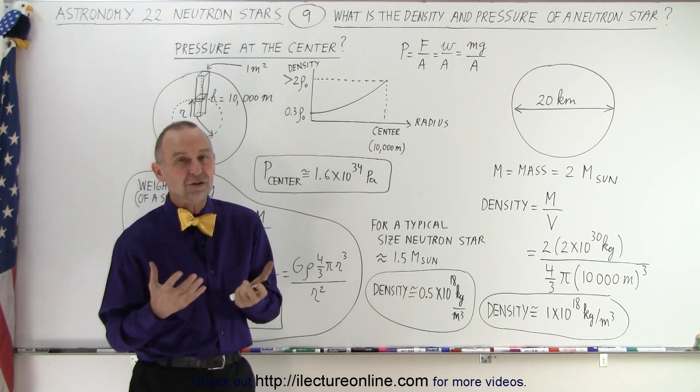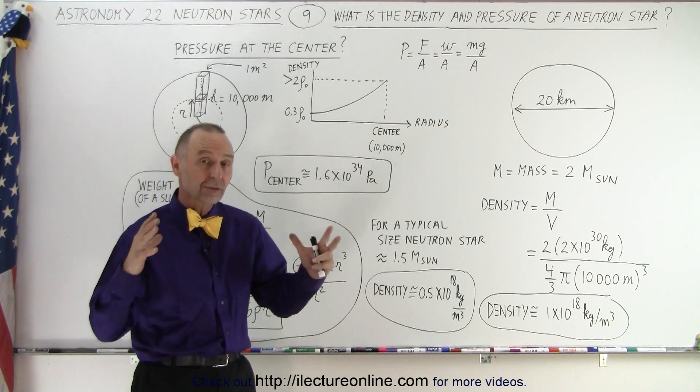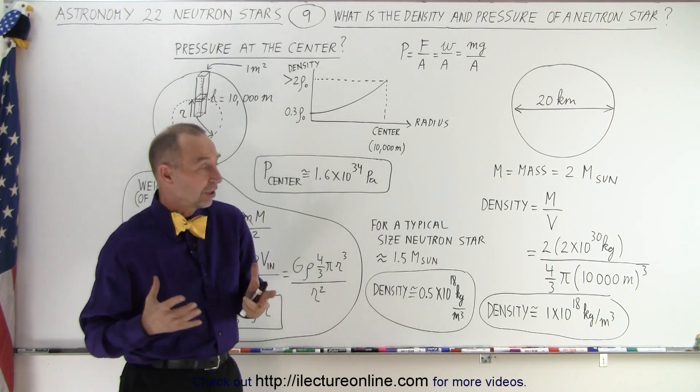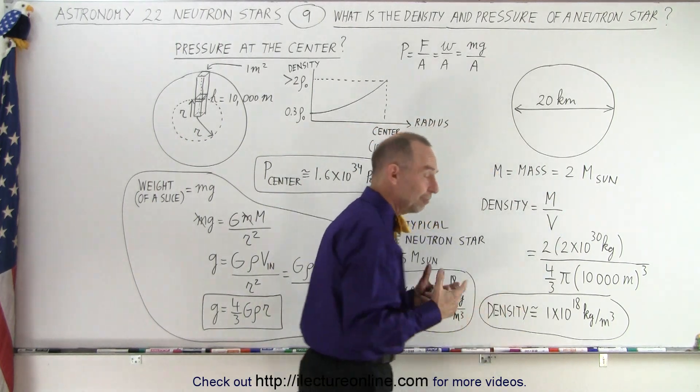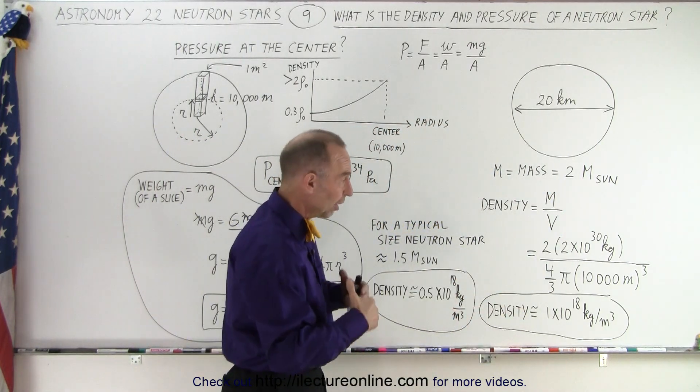Now, density is relatively easy to calculate. If we know the size of the neutron star and we know the mass, then density simply becomes the mass divided by the volume. And the volume, of course, would be a factor of the radius.